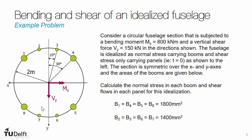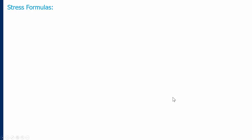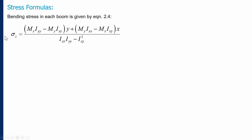Before we jump into the calculation, let's look at the stress equations for normal stress and shear flow, because that's really what we're after. We can start with bending stress in each boom, given by equation 2.4. The bending stress in the most general form is: mx times iyy minus my times ixy, all multiplied by y, plus my times ixx minus mx times ixy, all multiplied by x, divided by ixx times iyy minus ixy squared. A very long and complicated formula, however we can make some simplifications.